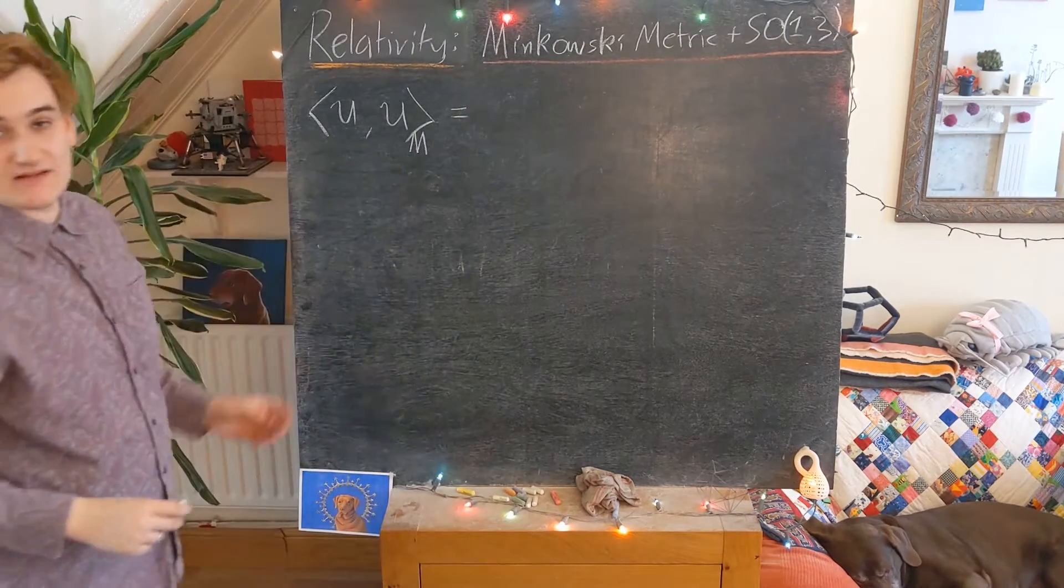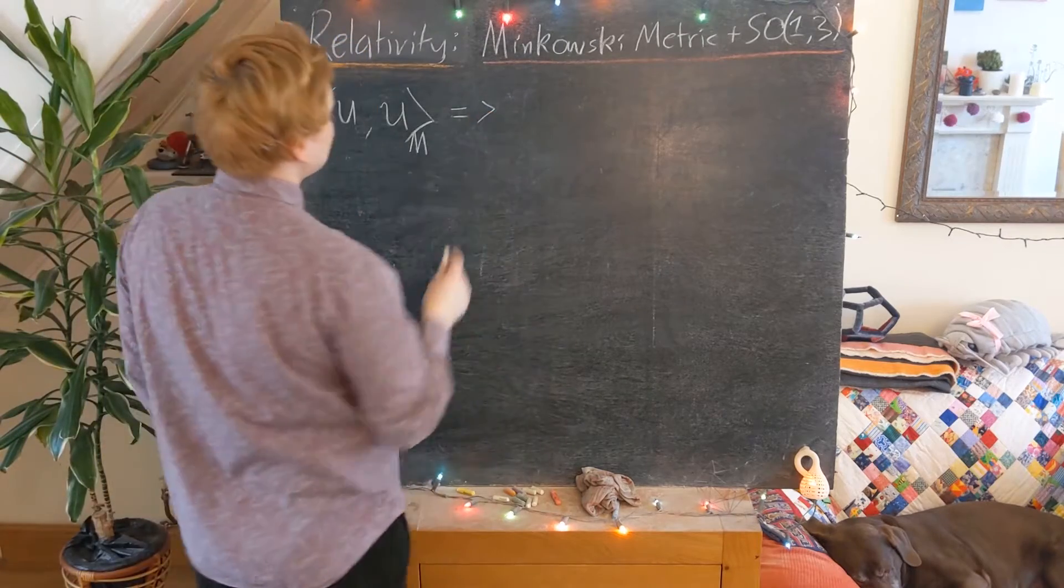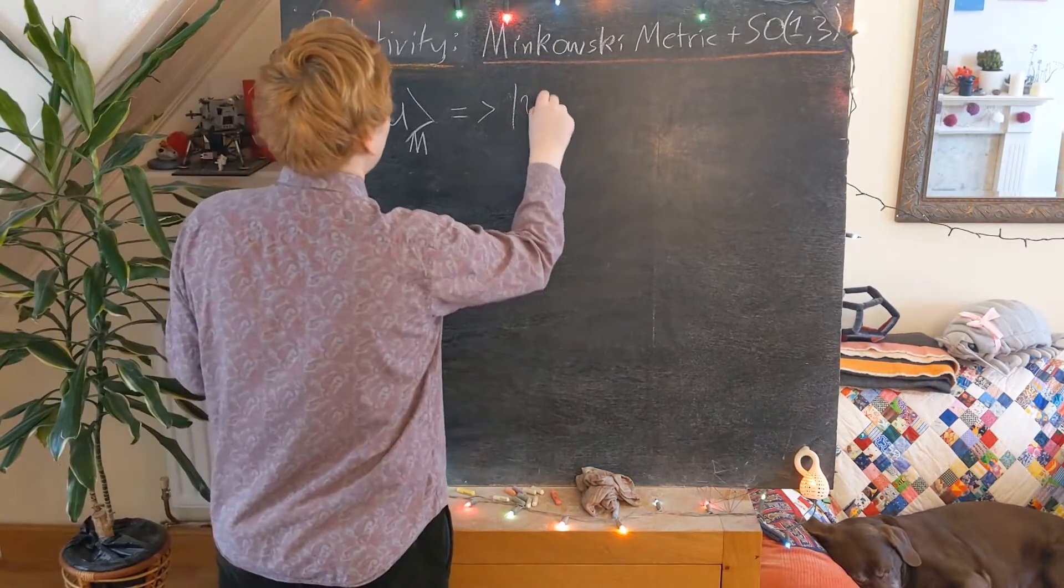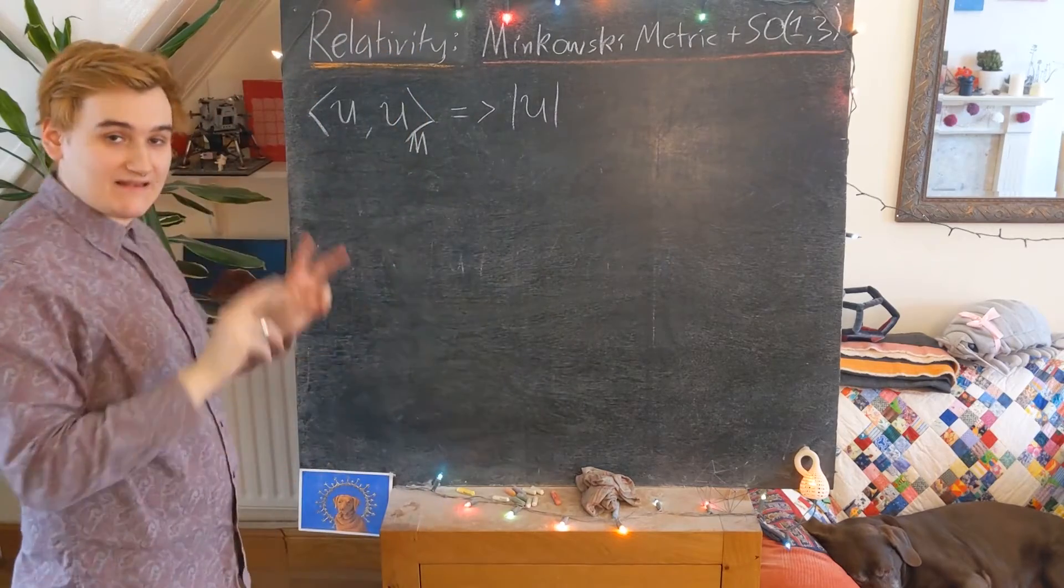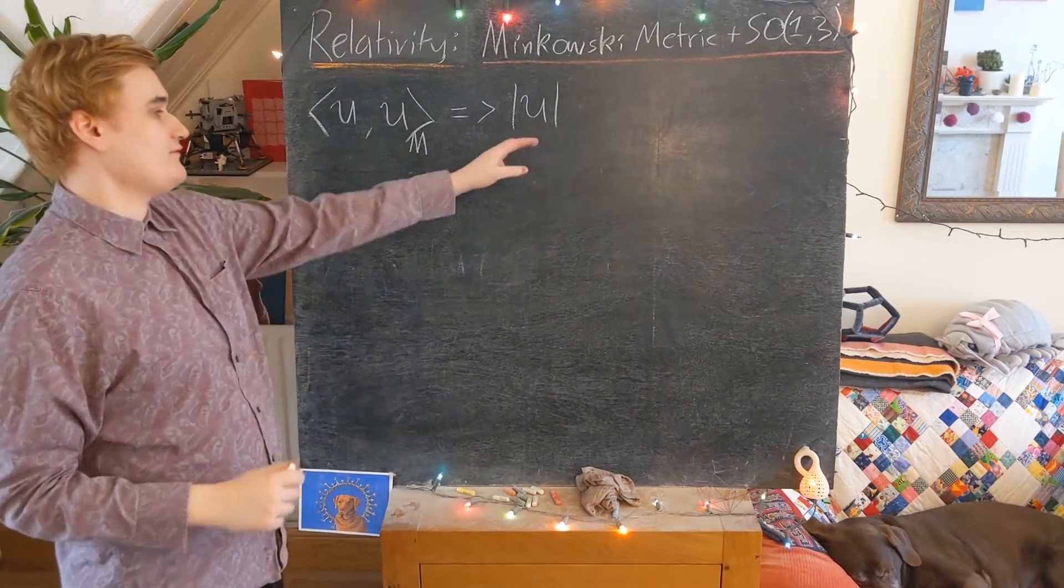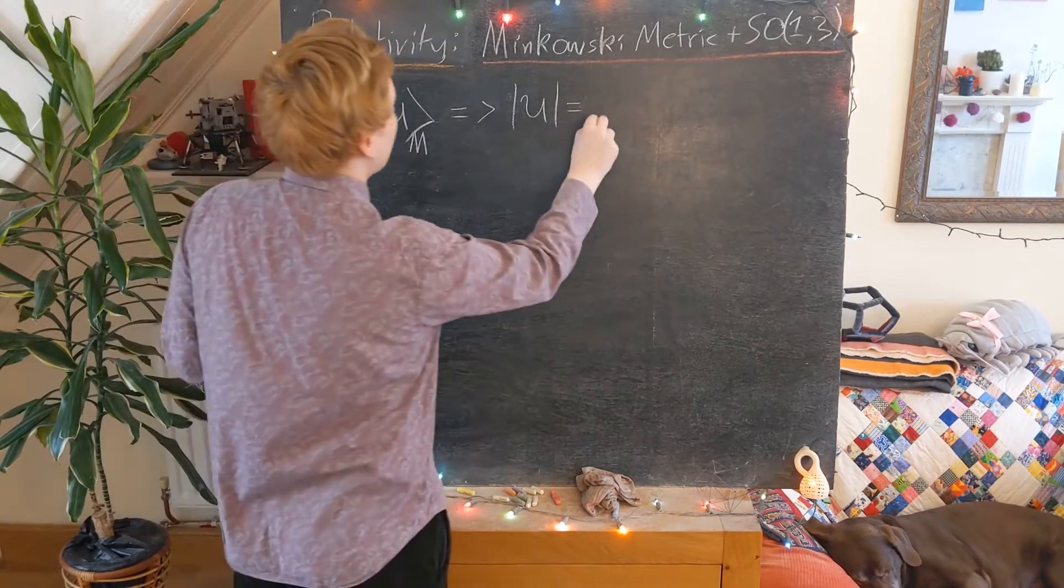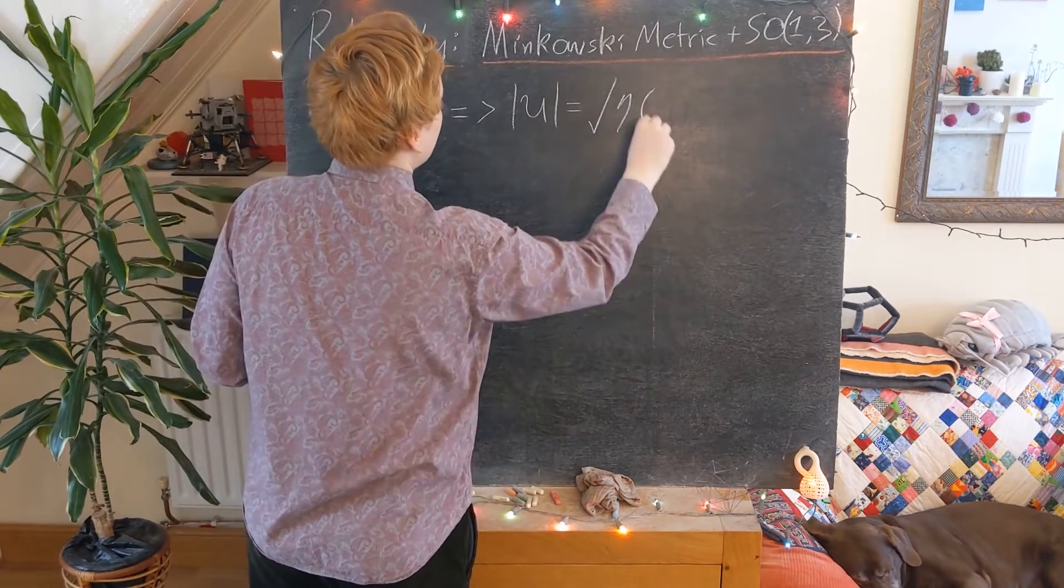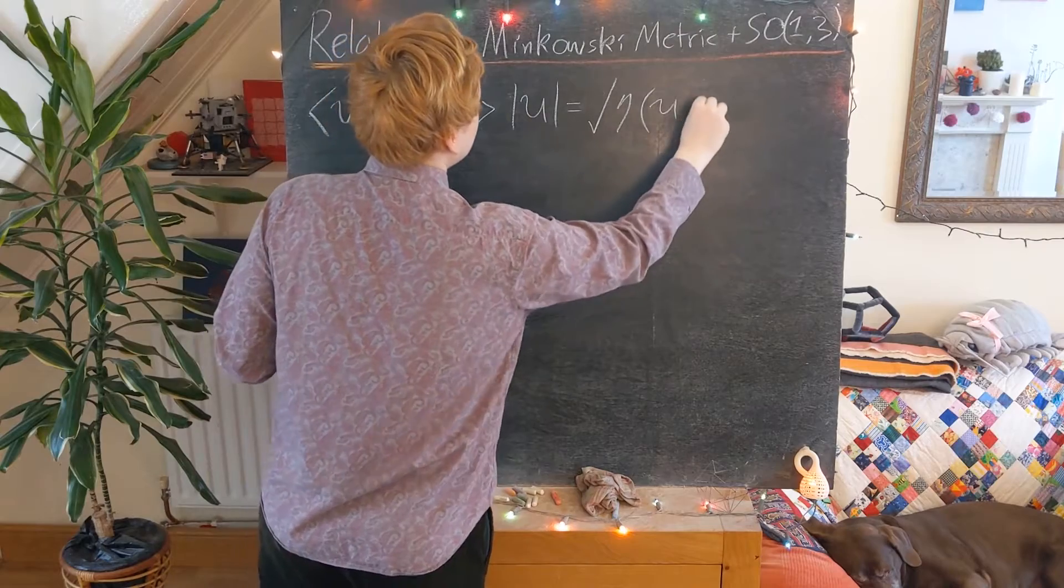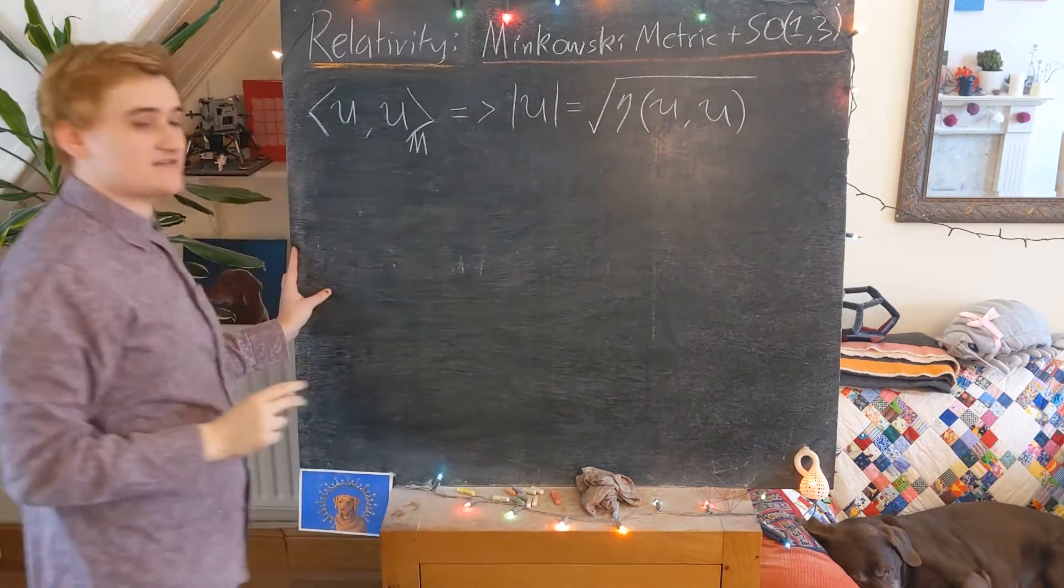Which then leads us on to being able to define the norm. So we can talk about the Minkowski length or the norm of any vector. And we know that's just going to be given by the square root of our metric tensor eating two copies of our vector.